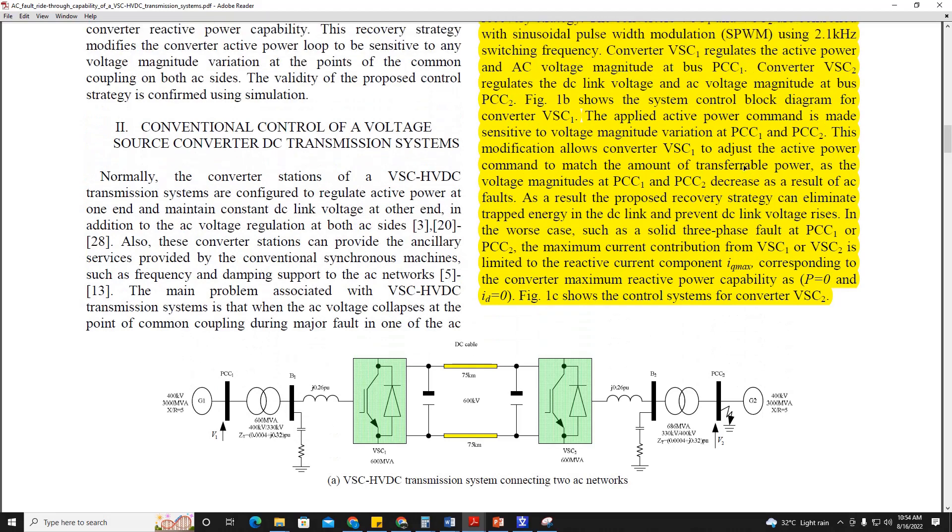And how does it ensure this? The applied active power command is made sensitive to voltage magnitude variation at PCC1 and PCC2. If a fault happens at either PCC1 or PCC2, then active power is related to that voltage magnitude variation. Active power will limit itself, will change itself corresponding to changes made in point of common coupling 1 and point of common coupling 2. If there is voltage interruption at PCC2 or voltage dip at PCC2, then it will assume that the fault has happened and depending upon this fault, the fault will communicate to converter station 1 and converter station 1 will reduce its power.